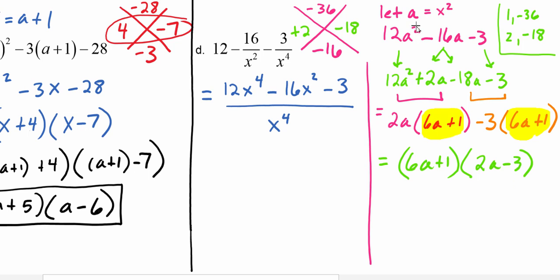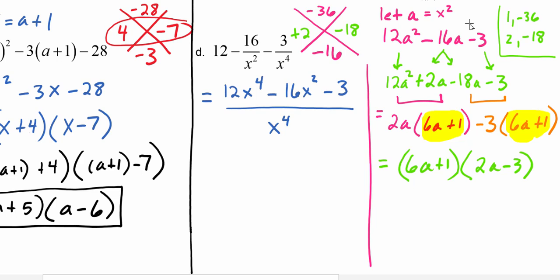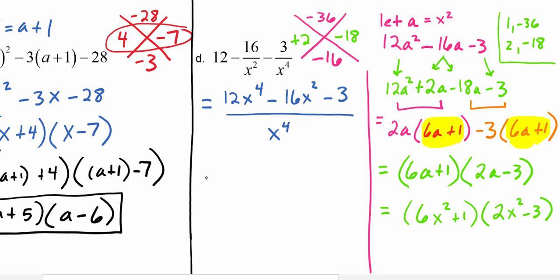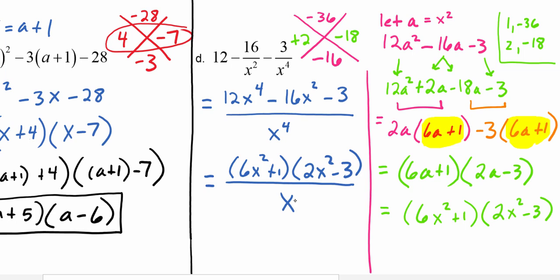We substitute back with a equal to x squared, giving 6x squared plus 1 times 2x squared minus 3. Bringing that back into the numerator over the denominator x to the fourth, the final factorization is 6x squared plus 1 times 2x squared minus 3, all over x to the fourth.